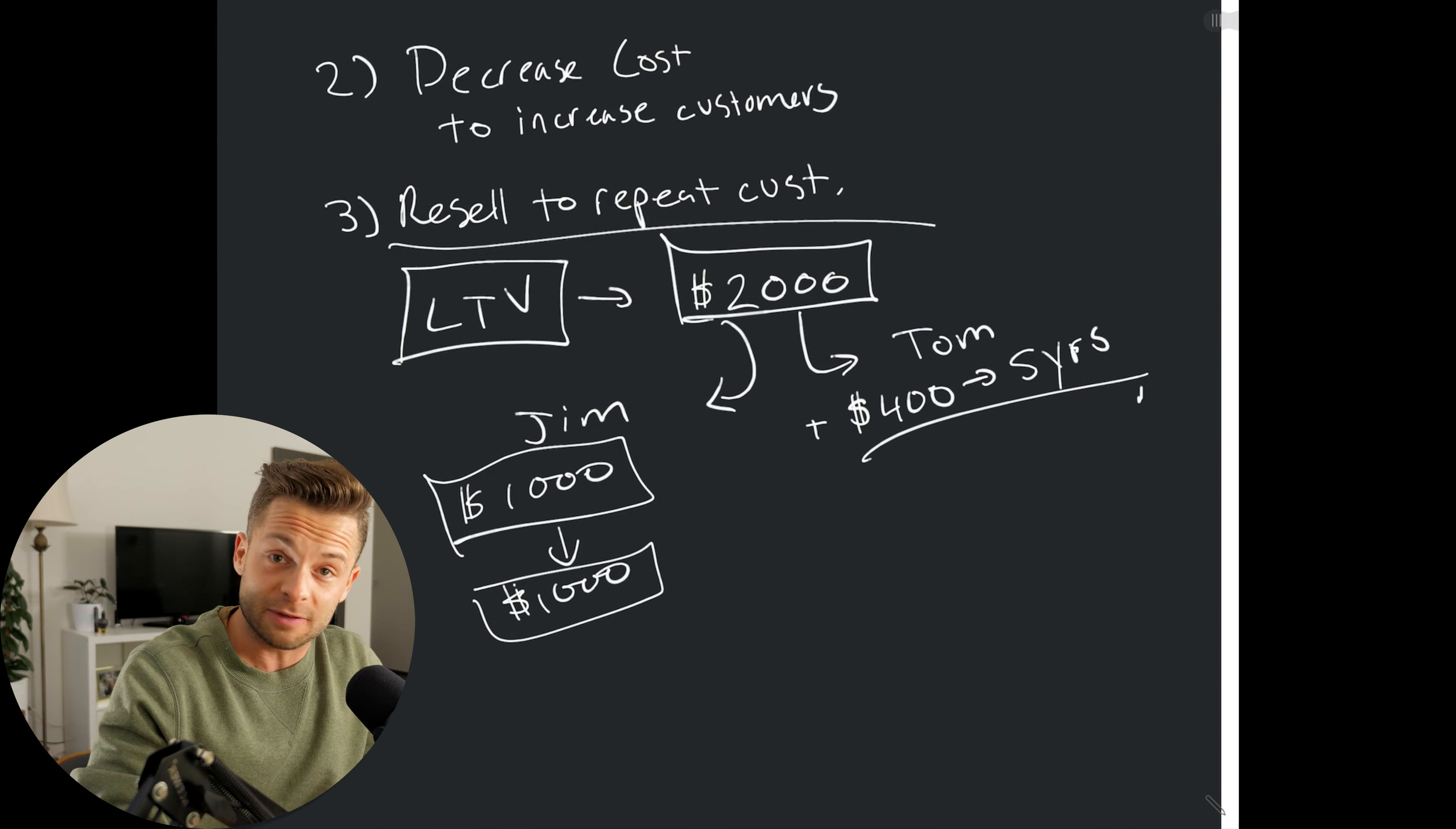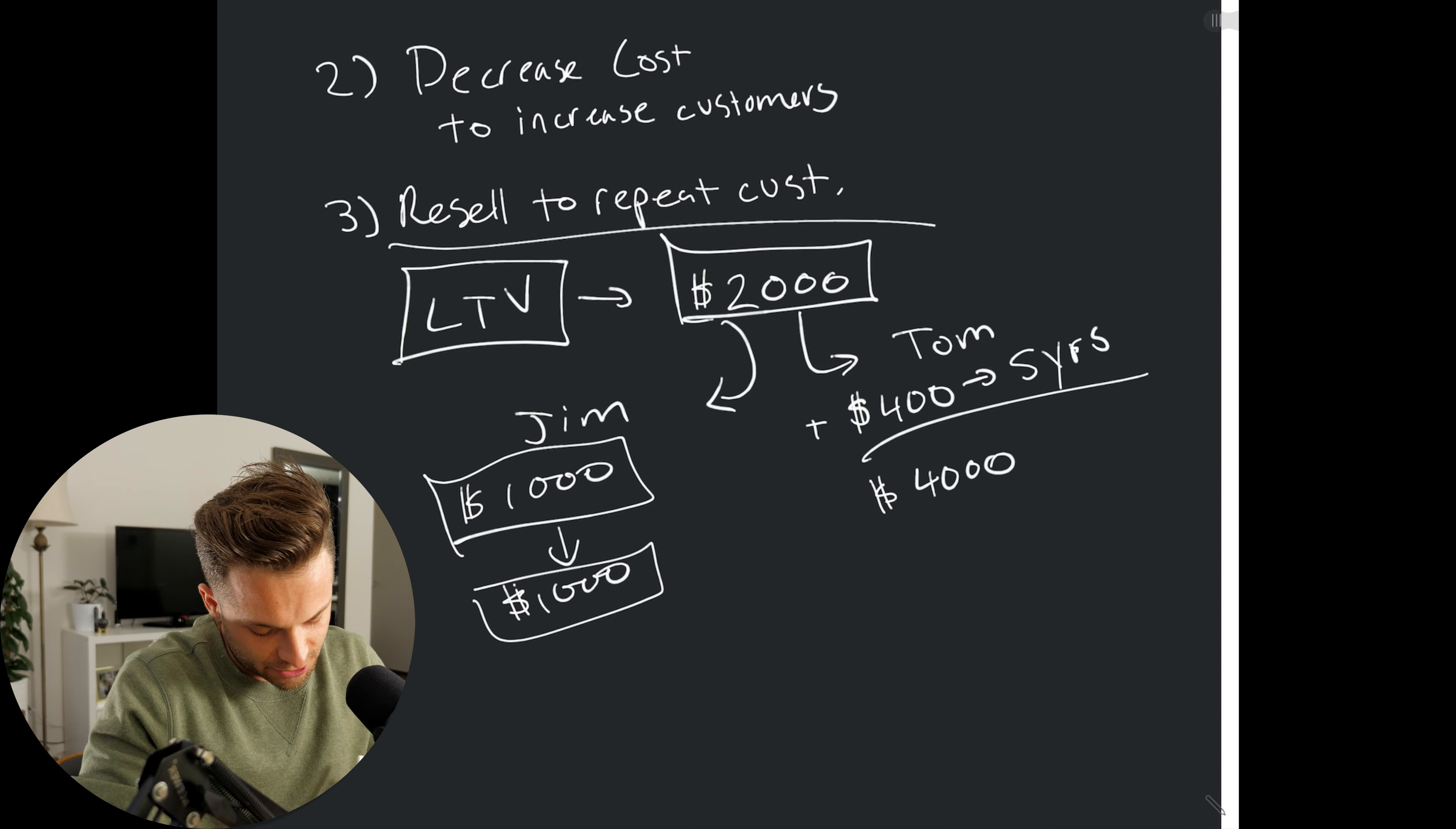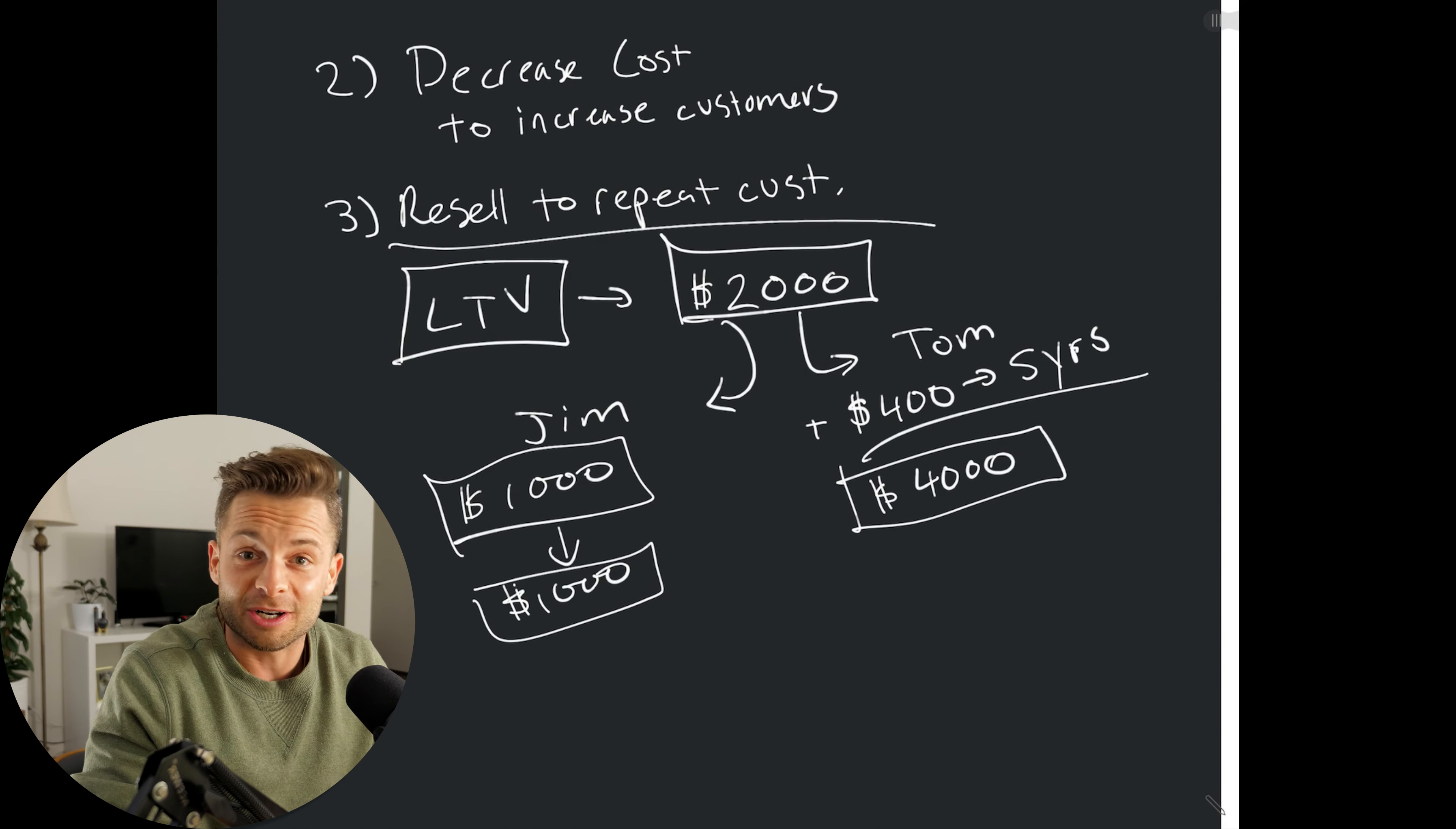So, now, Tom has an LTV of $4,000 because he's got that original $2,000 from the wedding and he's got another $2,000 from those follow-up services. So, now, Tom knows that Jim can really only afford to spend around $1,000 marketing to get a client.